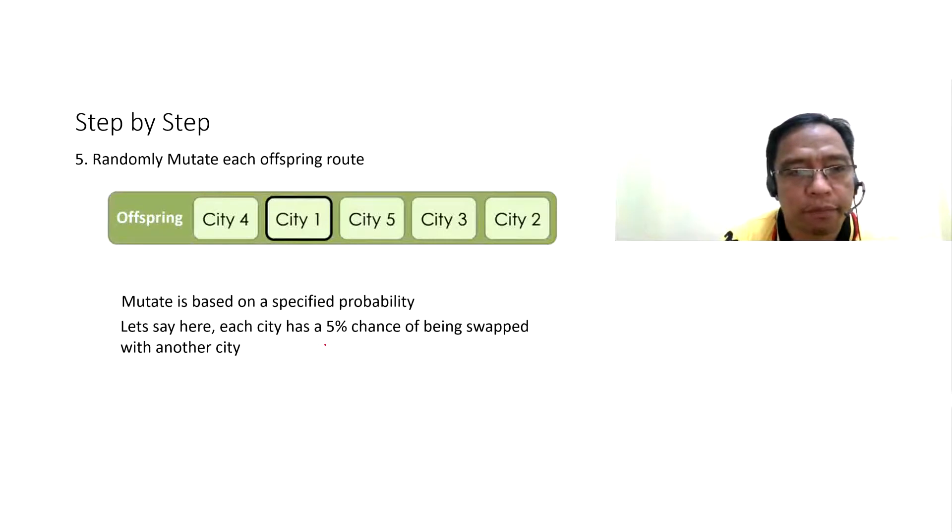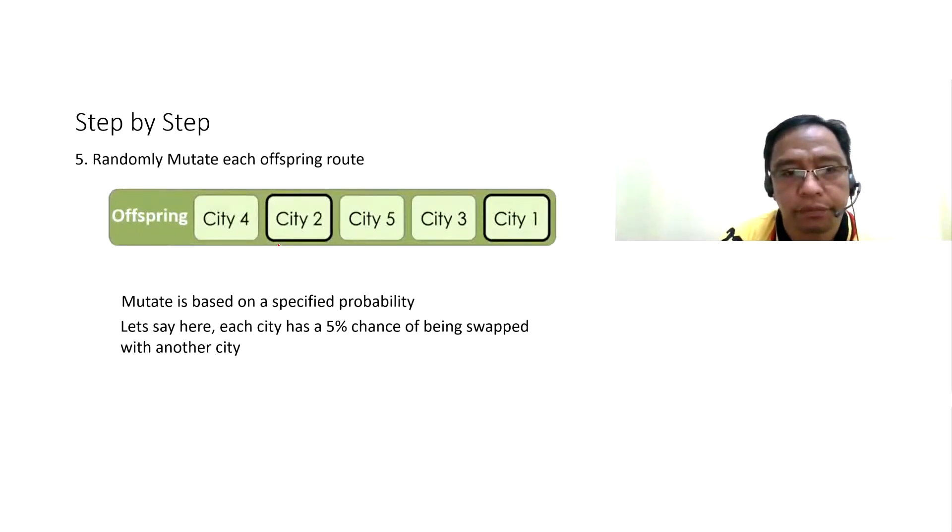Step number five, randomly mutate each offspring or offspring route. Mutate is based on the specified probability. Let's say here, each city has a 5% chance of being swapped with another city. Using a predetermined probability, we decide whether to mutate or not. In this case, CT1 has been selected to mutate. So, CT1 and CT2.